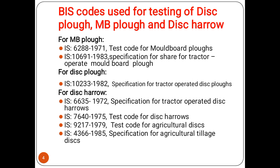For the moldboard plow, there are two IS codes: IS 6288 and IS 10691. IS 6288 is the test code for the moldboard plow, and IS 10691 is the test code specification for the share of tractor-operated moldboard plow. For disk plow, IS 10233 is the specification for tractor-operated disk plow.